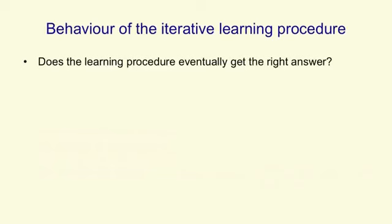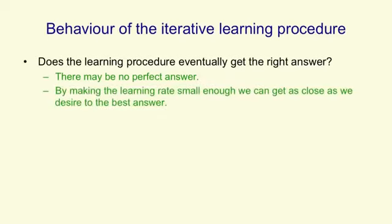Now we can ask how does this learning procedure, this delta rule, behave? Does it, for example, eventually get the right answer? There may be no perfect answer. It may be that we give the linear neuron a bunch of training cases with desired answers, and there's no set of weights that will give the desired answer. There's still some set of weights that gets the best approximation on all those training cases, minimizes that error measure summed over all training cases. And if we make the learning rate small enough and we learn for long enough, we can get as close as we like to that best answer.